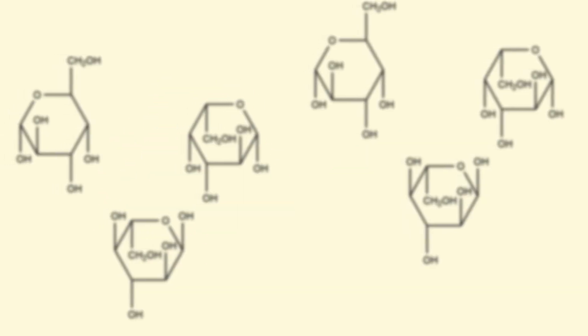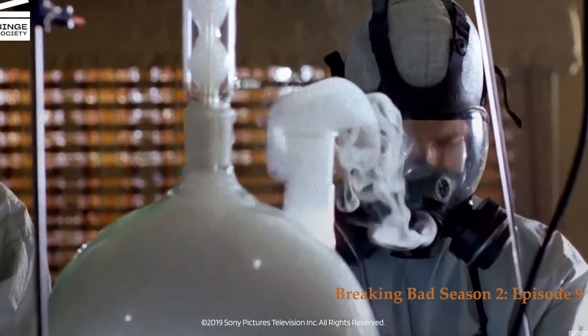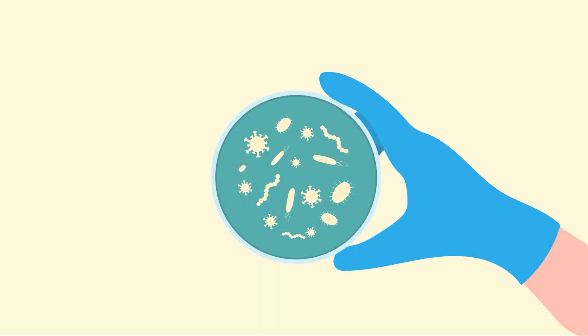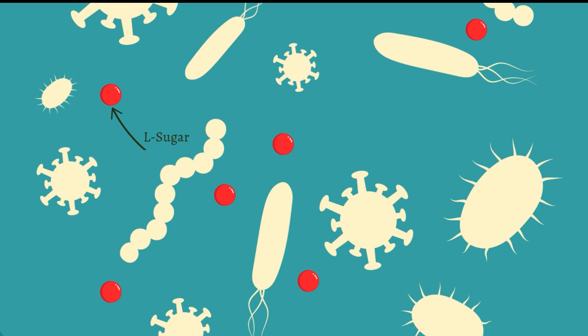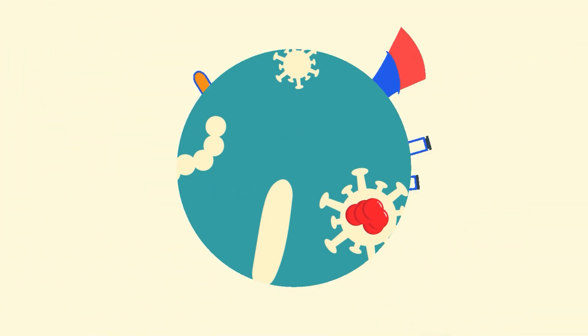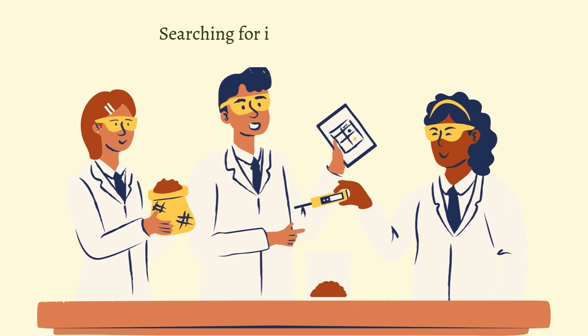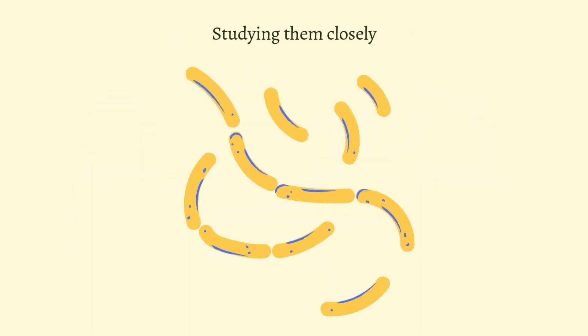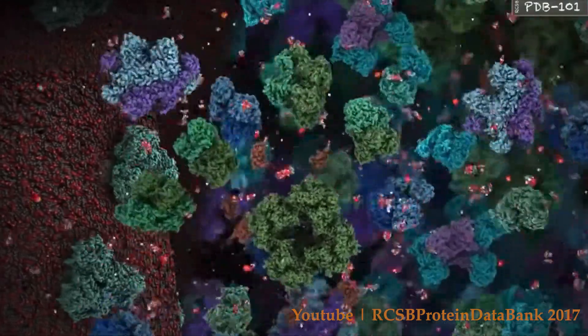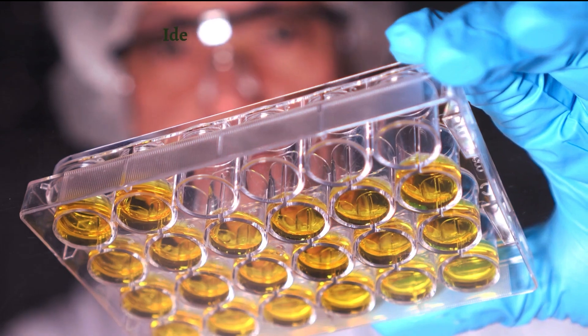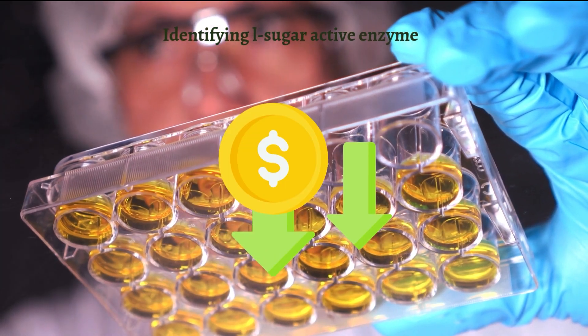L-Sugars are rare in nature, making them highly expensive as the only way to obtain them is using really hard synthetic routes. Interestingly, some microorganisms can metabolize L-Sugars using specialized pathways. By studying these microbes, researchers are uncovering new enzymes from these pathways that show reactivity with L-Sugars. Finding enzymes that can produce L-Sugars on a larger scale would allow us to further explore their exciting potential applications and to bring down their high costs.